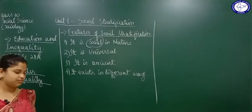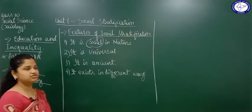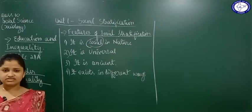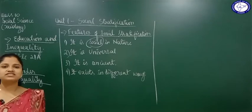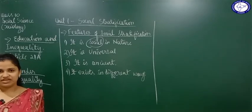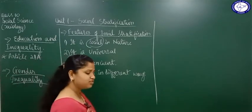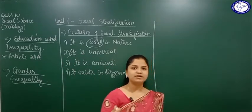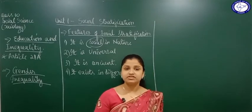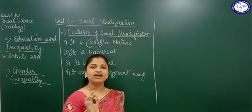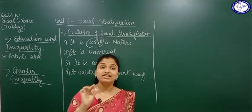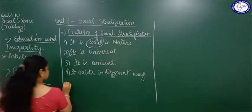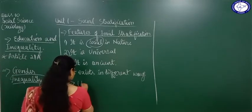As time passed, the Shudras — who were only manual laborers — were later considered untouchables. People thought they were very low class and you were not supposed to go near or touch them, otherwise you would become impure. This practice is called untouchability, and it is called a social evil because it was a very wrong thing happening in society.